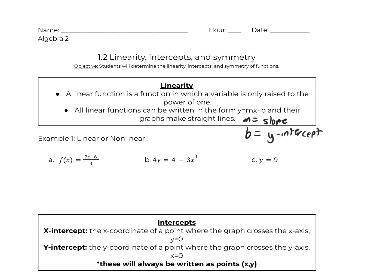Example one — linear or nonlinear? f of x equals 2x minus 6 over 3. We can write that as f of x, change that to y. y equals — we can distribute that over 3 to both terms: 2 thirds x and then negative 6 over 3. Negative 6 over 3 is the same thing as negative 2. So that's 2 thirds x minus 2. And looky there, I've got a slope of 2 thirds and a y-intercept of negative 2. So this is linear.